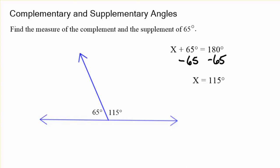Now, when students are taking a test, it's easy to forget which one is which. So, here's a quick, easy way to remember them. We have CO and SU. Well, complementary adds up to 90, and supplementary adds up to 180.